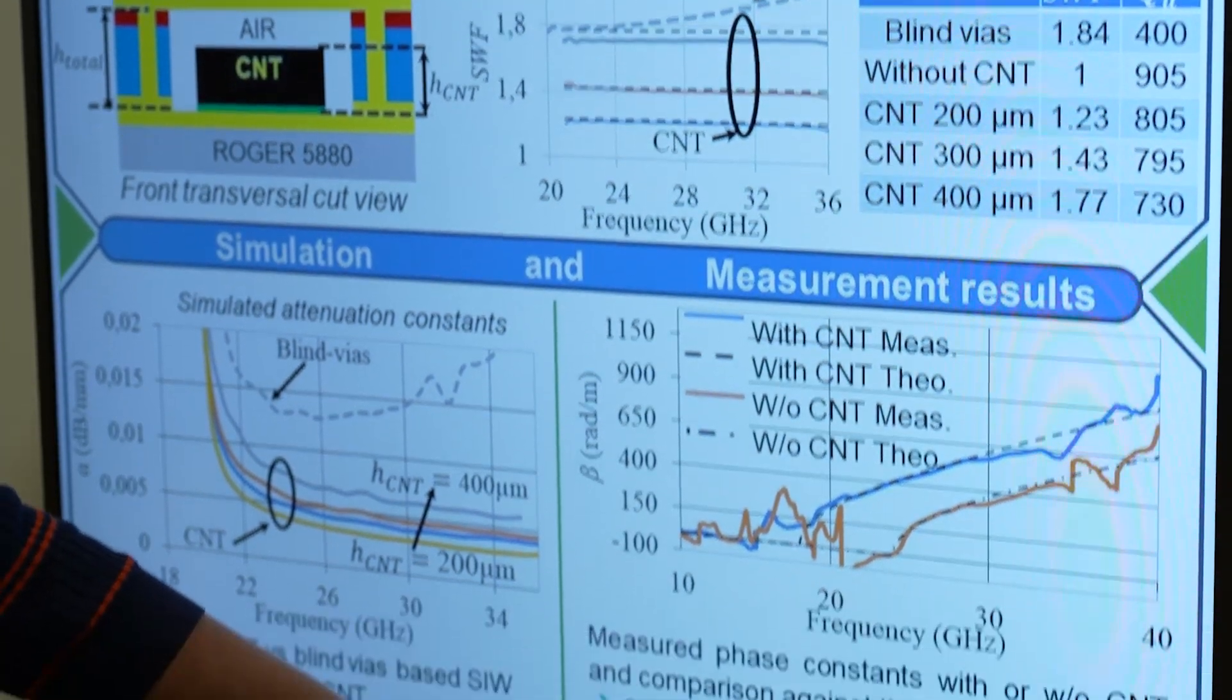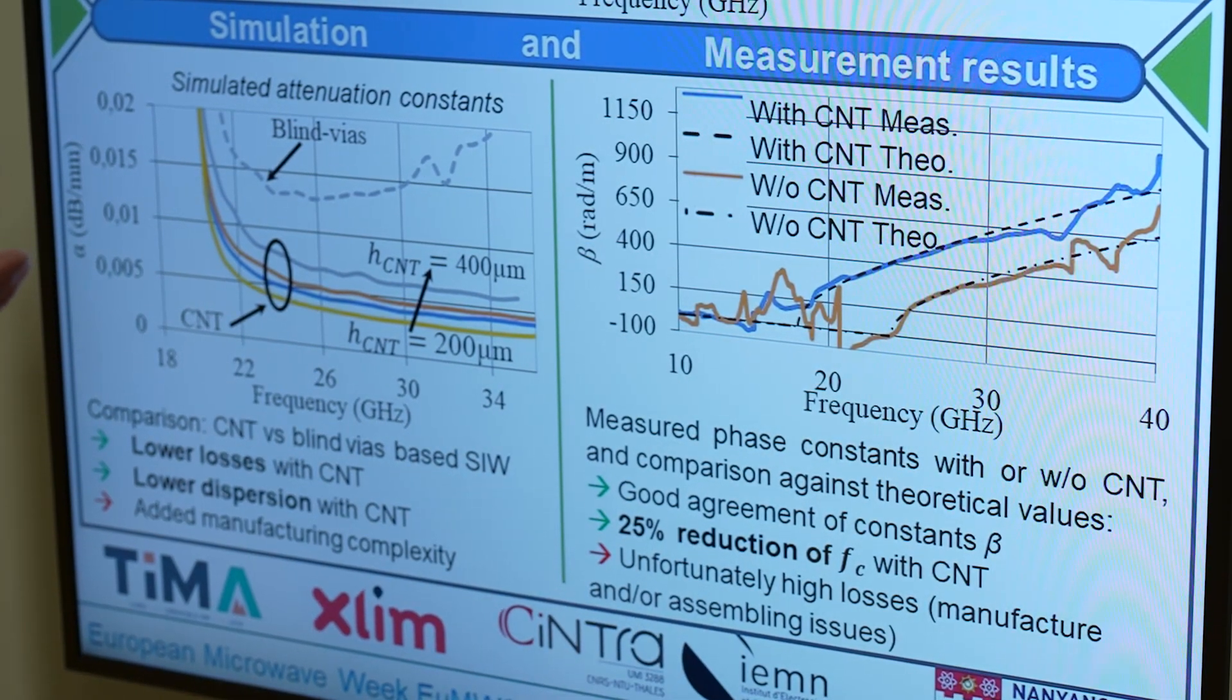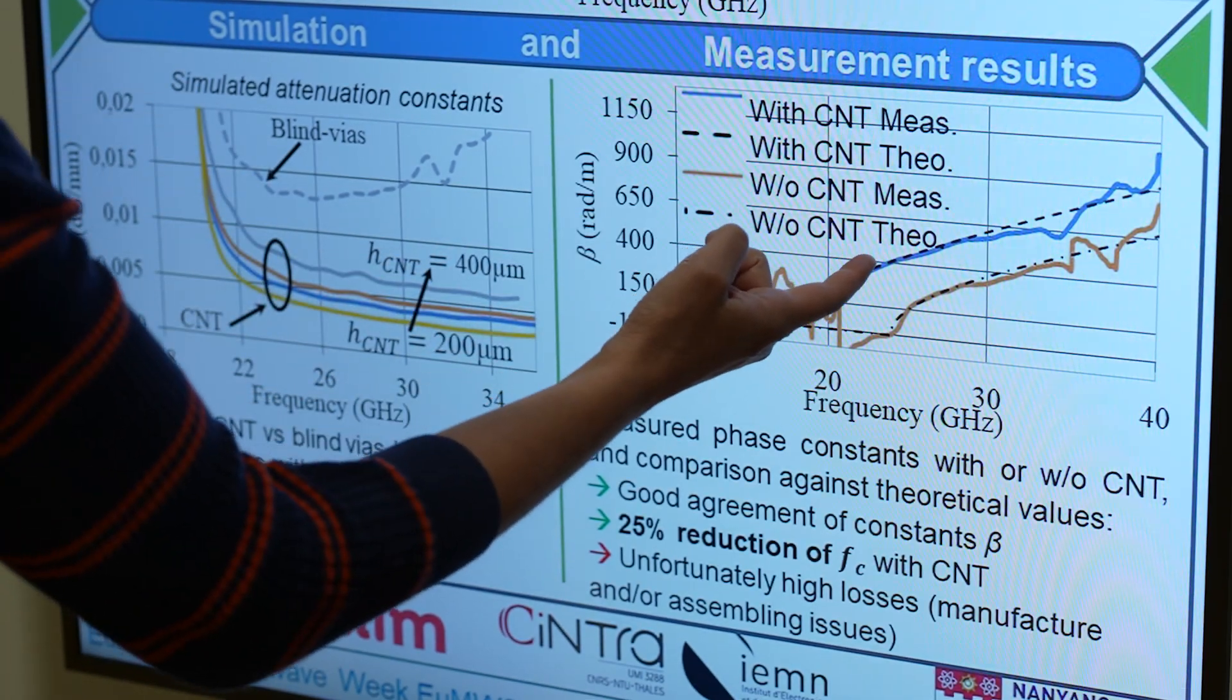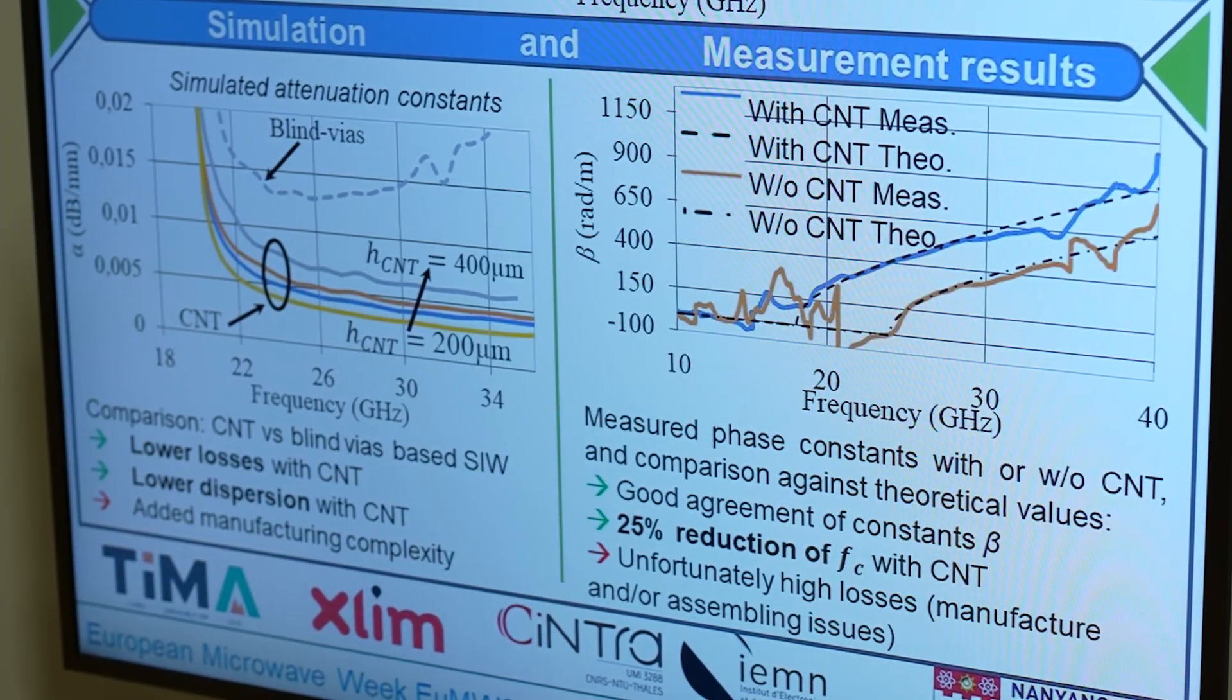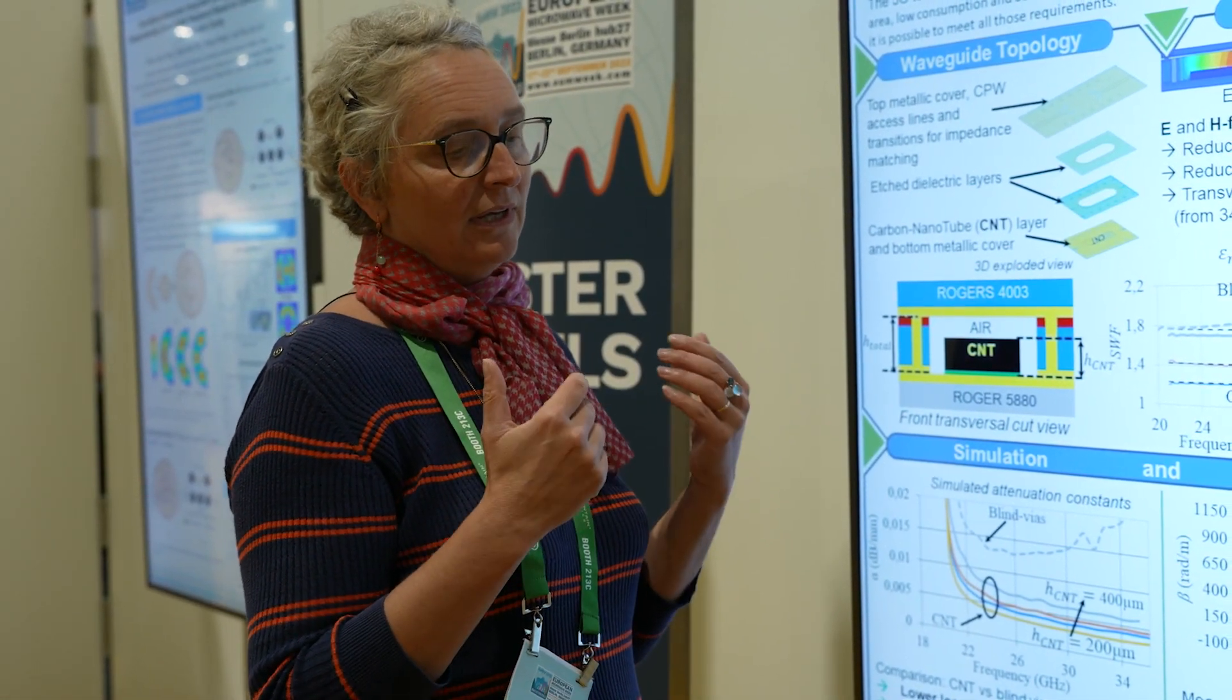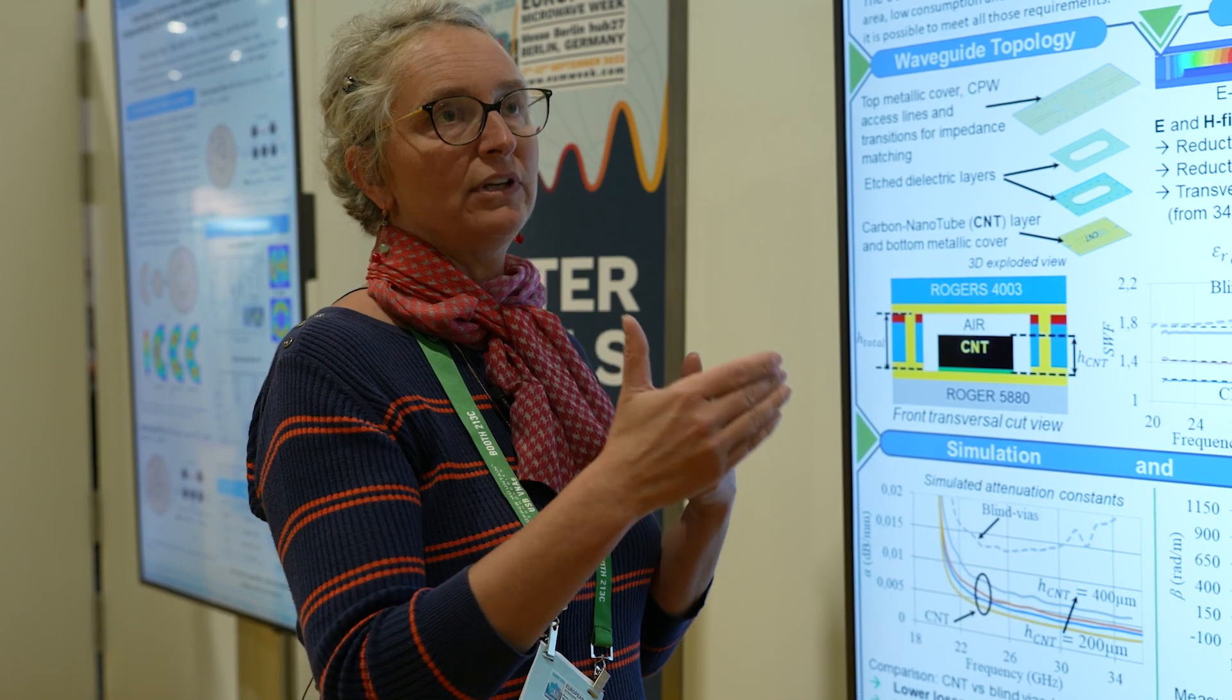As you can see, we have 25% reduction in the cutoff frequency, which is equivalent to saying that we have 25% reduction in width for a substrate integrated waveguide that would be the same as this one in terms of electrical response, and 25% reduction in length—meaning 25% by 25% reduction combined is a very interesting miniaturization in surface.